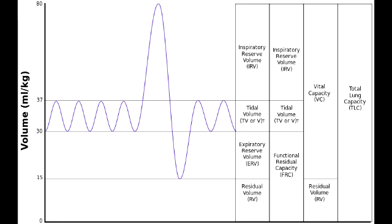What is functional residual capacity? Functional residual capacity is the volume in the lungs after normal expiration. This measure includes the expiratory reserve volume and the residual volume.